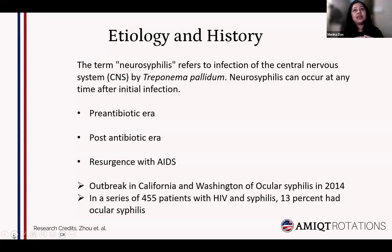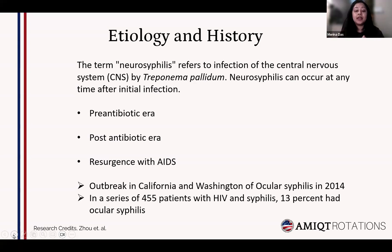Briefly talking about the history, neurosyphilis was very prevalent in the 20th century, which is called the pre-antibiotic era. Neurosyphilis was prevalent in 25 to 35 percent of syphilis patients, where one third had asymptomatic neurosyphilis, one third had tabes dorsalis, and the rest had meningovascular syphilis.